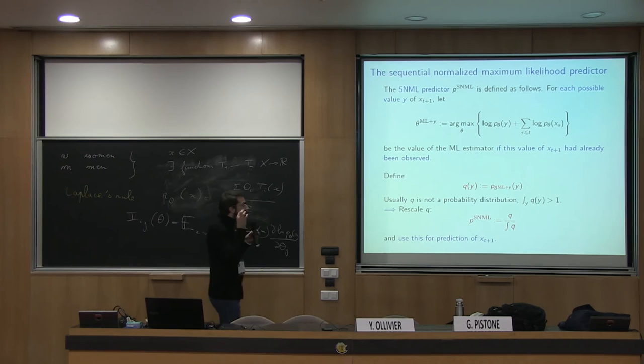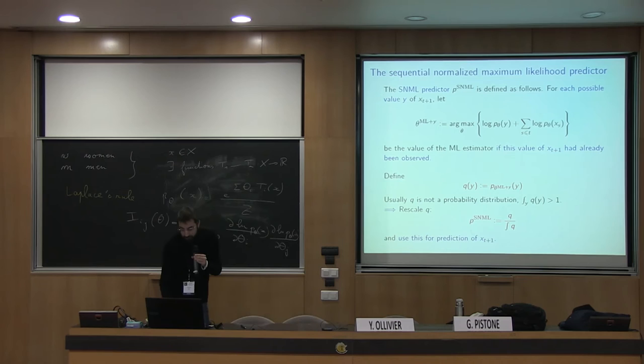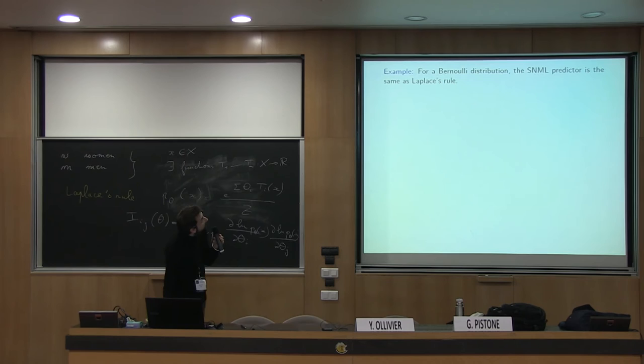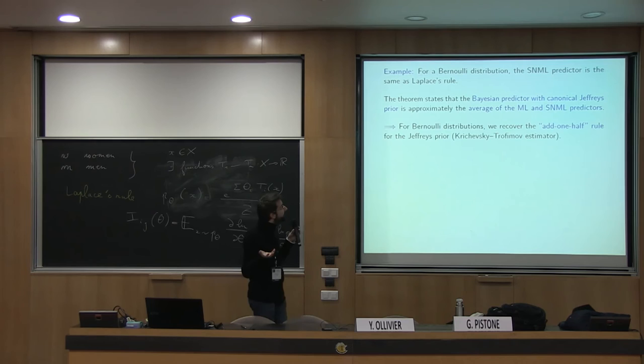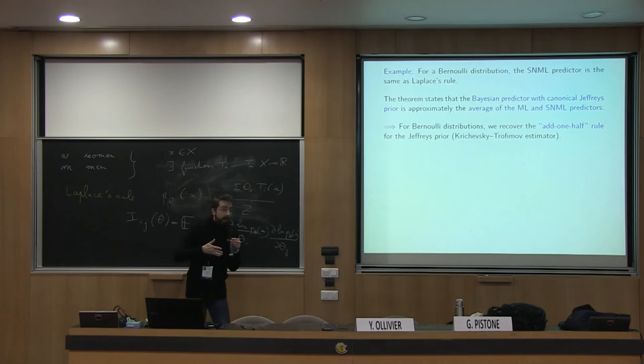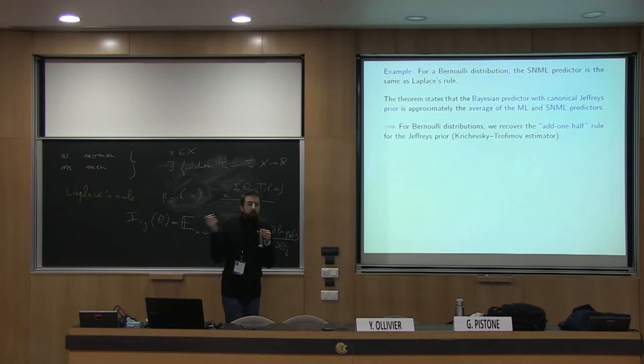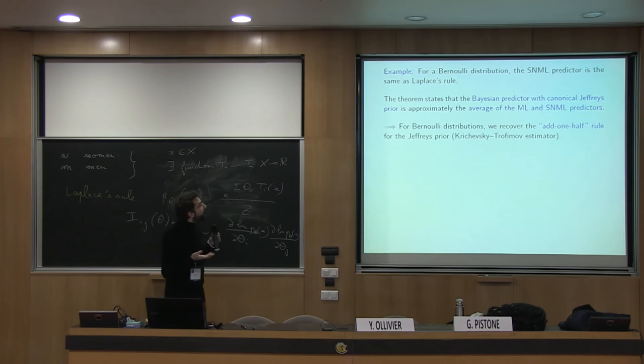For Bernoulli distributions, SNML is exactly Laplace's rule. For each possible value, you use the parameter that would be the maximum likelihood if that value had already been observed. The theorem states that the Bayesian predictor with canonical Jeffreys prior is approximately the average of the maximum likelihood and this modified maximum likelihood SNML estimator. For Bernoulli distributions, you get that the Jeffreys prior lies halfway between maximum likelihood and Laplace's rule — that is, you get the add-one-half rule instead of the add-one rule.